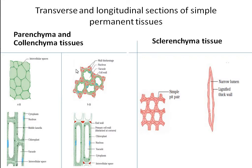This is colenchyma. Here there are red spots around the corners — red marks around the corners only. The corners are thickened. These red shades are thickening material. The corners of the cells are thickened, not the complete wall. The corners of the cell walls are thickened by a material called pectin.